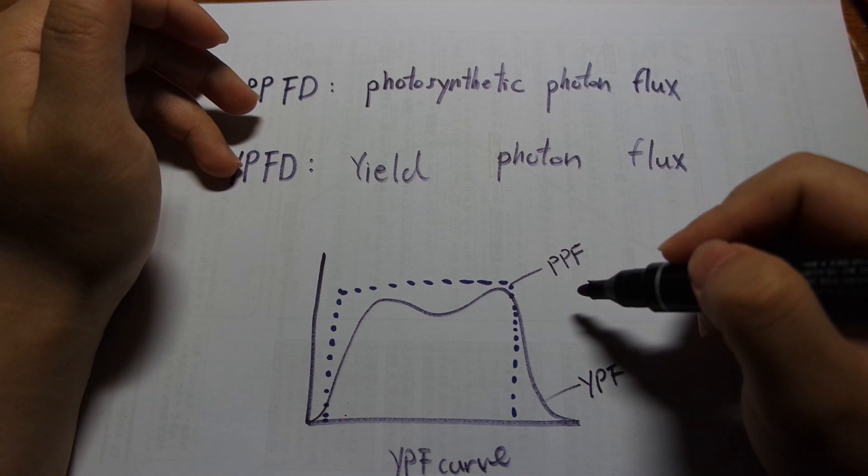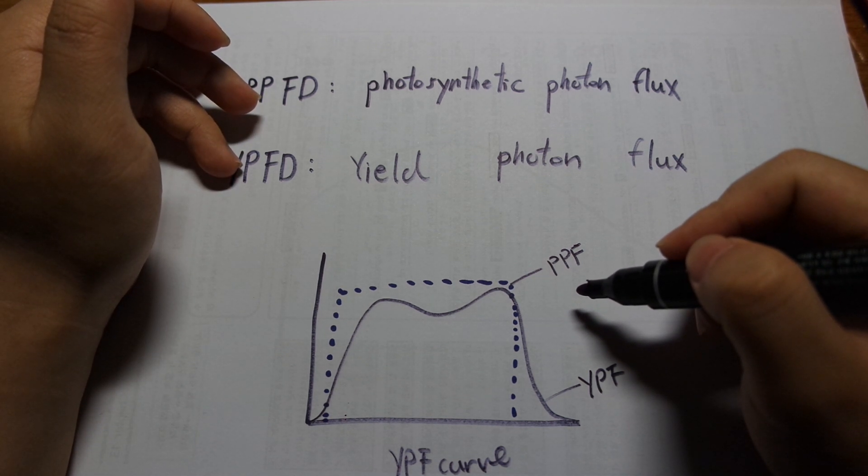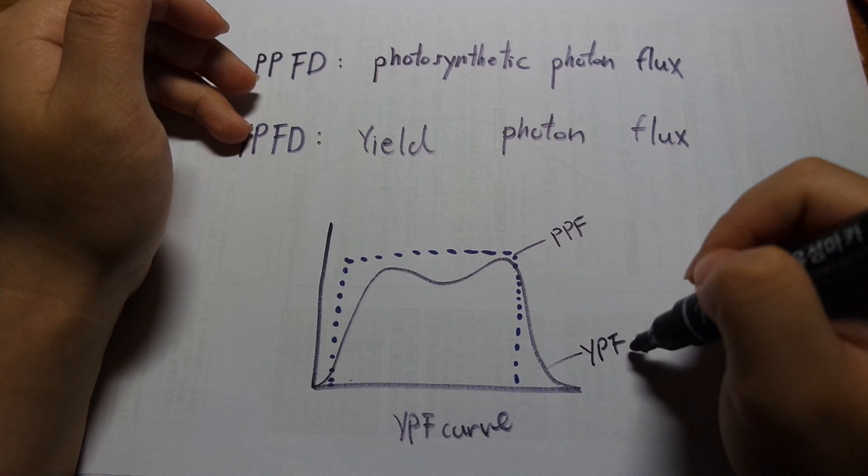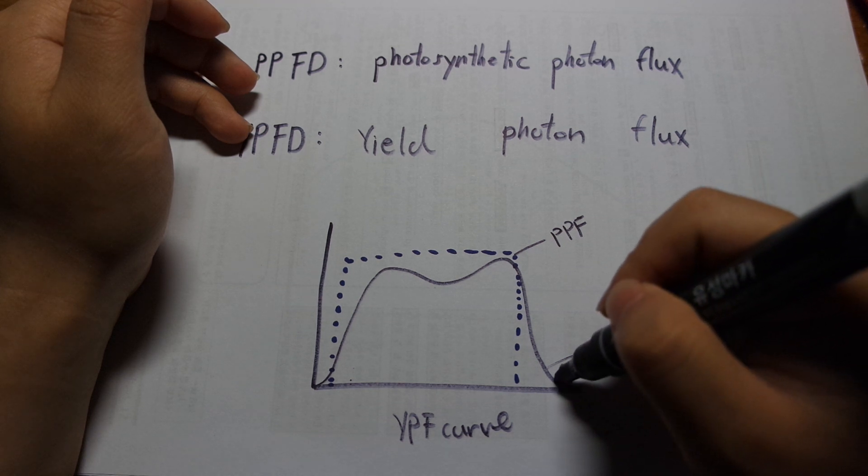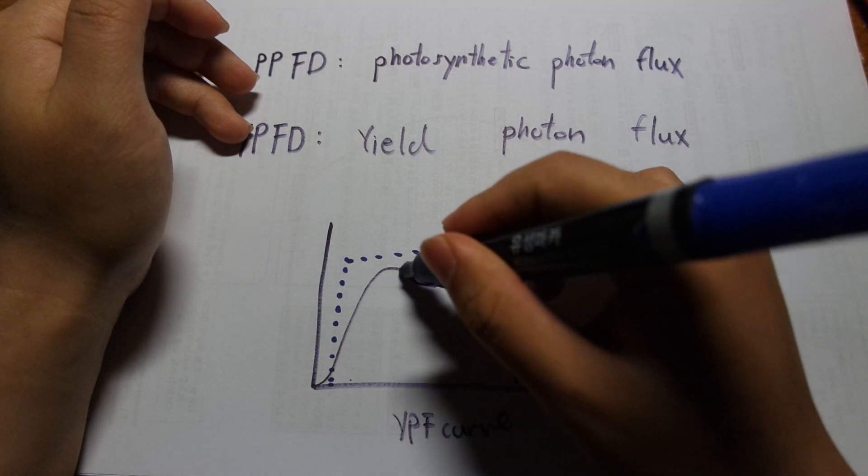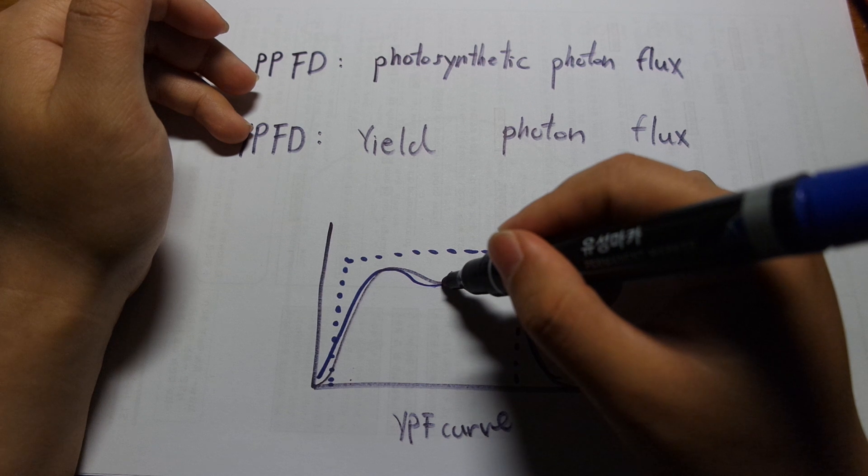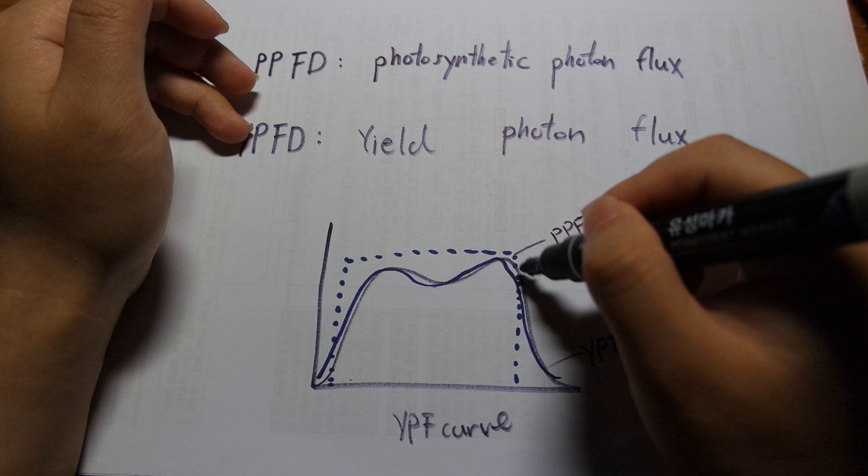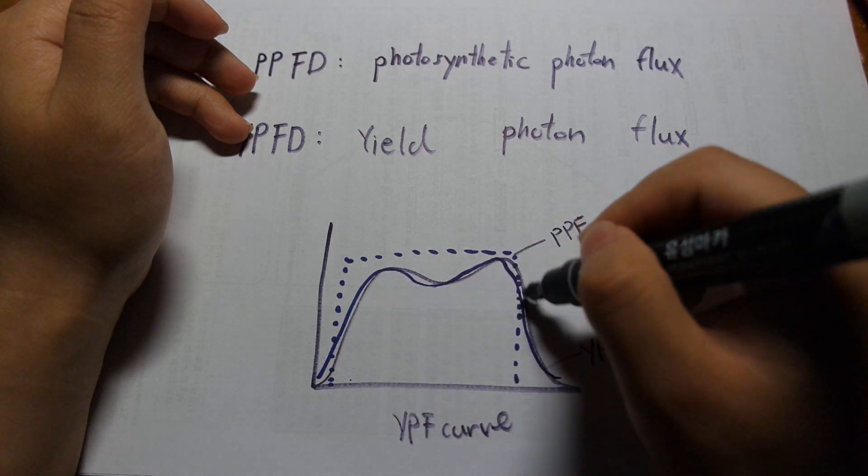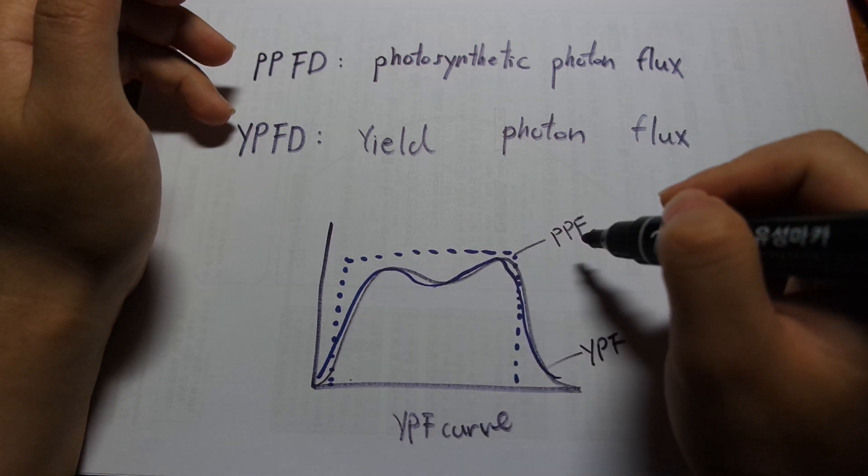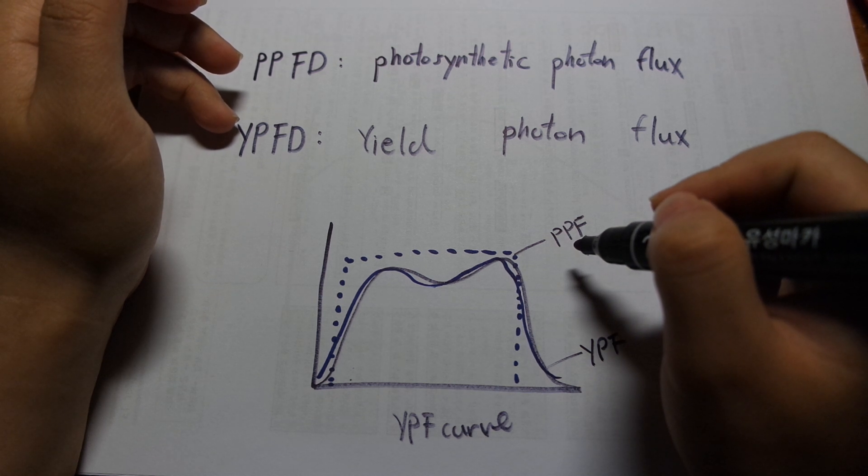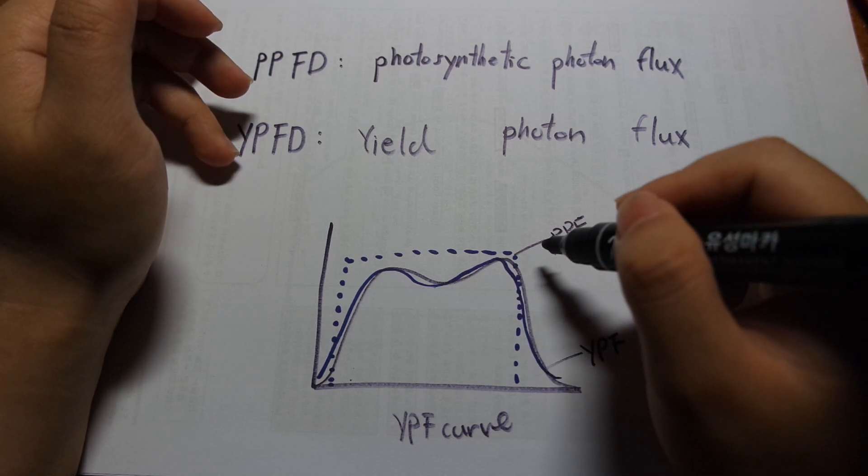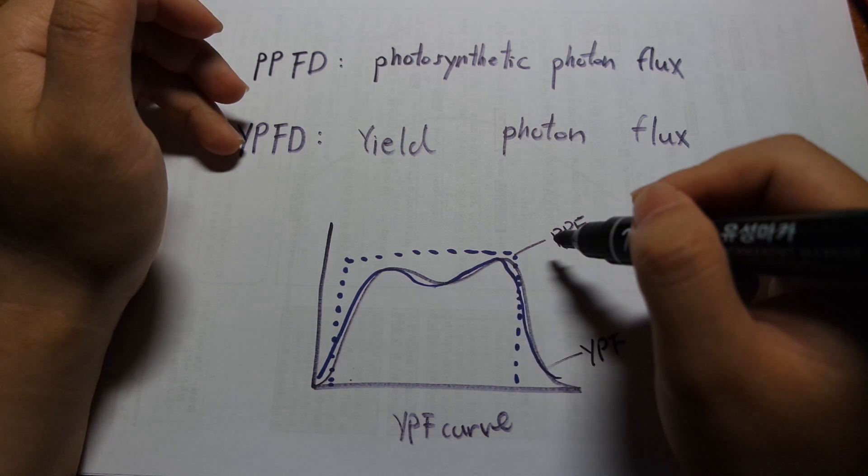Whereas YPFD, if you remember my previous parts I discussed that there is a yield photon curve. So this is the yield photon curve right here. So green light is slightly less than red light and blue light. So red and blue light have slightly more activation of photosynthesis in study in isolated leaves. So yield photon flux, it will consider a green photon slightly less than a red photon. So to consider that, it will discriminate between different wavelengths.